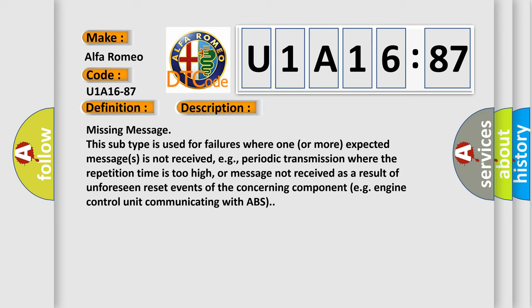Missing Message. This subtype is used for failures where one or more expected messages is not received, e.g., periodic transmission where the repetition time is too high, or message not received as a result of unforeseen reset events of the concerning component, e.g., engine control unit communicating with ABS.